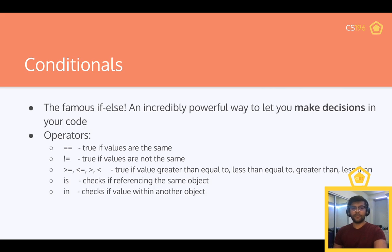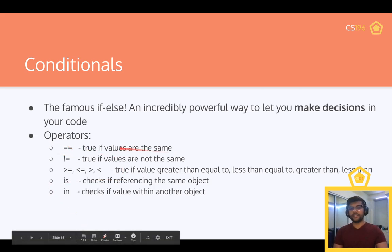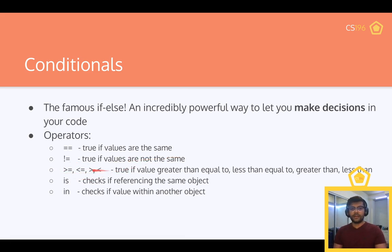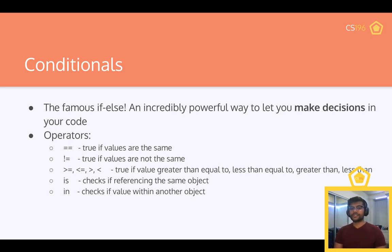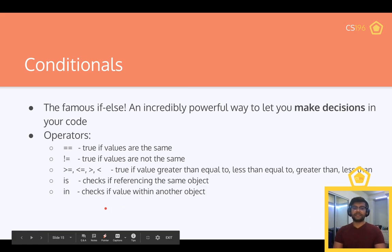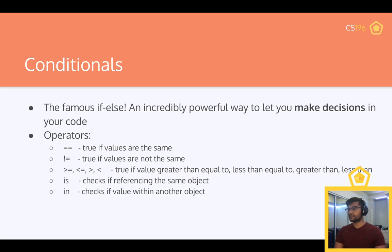Now conditionals — the famous if/else. This is a powerful way to make decisions in your code. Operators include: equals-equals (values are the same), not-equal, greater-than-or-equal, less-than-or-equal, greater-than, less-than. Python also has two unique ones: 'is' checks if you're referencing the same object, and 'in' checks if a value or object can be found within another object.